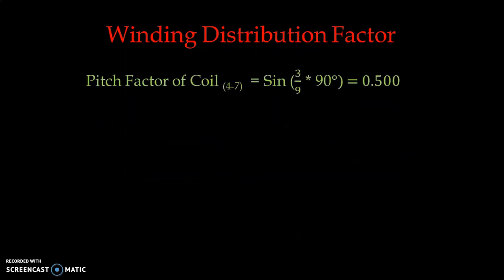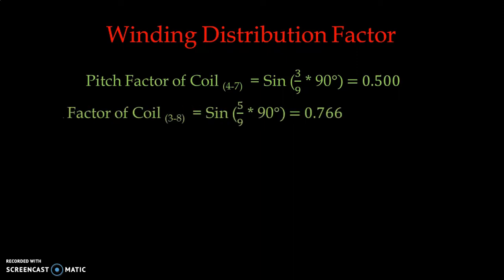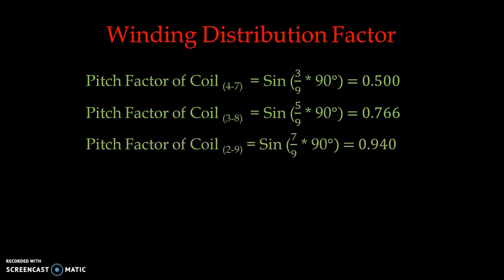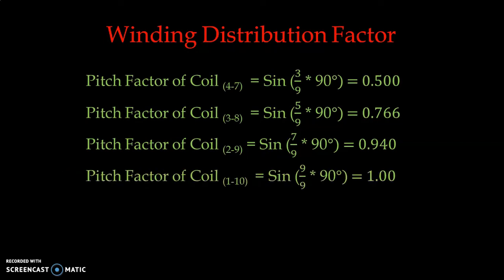First we consider the pitch factor. Pitch factor of coil 47: sine of (3/9 × 90°) = 0.5. Pitch factor of coil 38: sine of (5/9 × 90°) = 0.766. Pitch factor of coil 29: sine of (7/9 × 90°) = 0.940. Pitch factor of coil 110: sine of (9/9 × 90°) = 1.